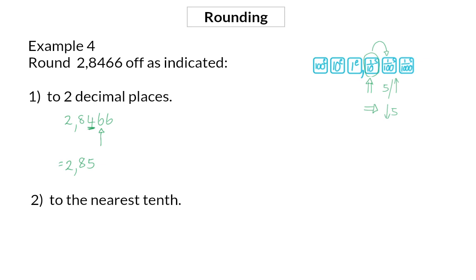In question 2, we need to round to the nearest tenth. Our tenth will be the first decimal, and that means we need to focus on the second decimal, which is a 4. This is smaller than 5, so our rounded answer will be 2,8. Remember, to the nearest tenth means we are looking at 84, and we need to decide whether this value is closer to 80 or to 90. And that is why we say 2,8.